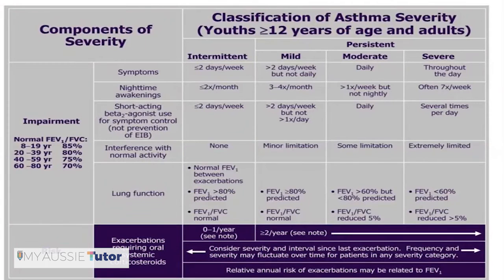The classification of asthma is based on its severity. For youth 12 years of age and older and all adults: asthma is classified as intermittent if symptoms occur less than two days per week, nighttime awakenings are less than two times per month, short-acting beta agonist use for symptom control is less than two days per week, interference with normal activity is none, and lung function is normal with FEV1 greater than 80% predicted and FEV1/FVC ratio normal. Exacerbation requiring oral systemic corticosteroids occurring 0 to 1 time per year is considered a risk factor.